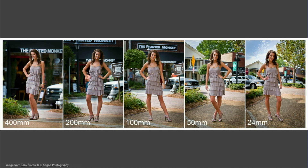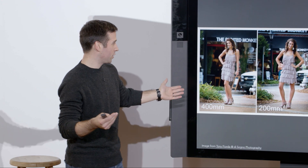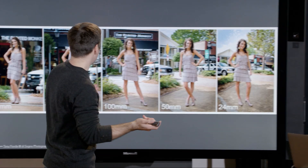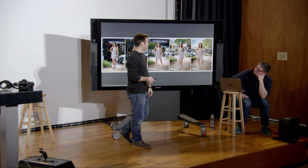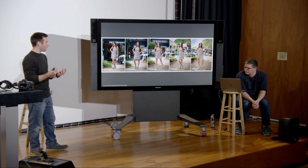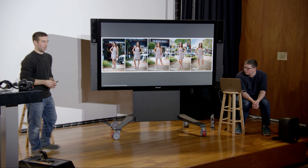The same effect applies to the human body. At 400mm, the subject appears right in front of the storefront — no sense of space or depth, no way to tell how far she is from the store. At 24mm, you're almost wondering where that painted monkey storefront is — it feels like she's miles away from it. The relationship between your subject and background depends partly on distance, but also on what lens you have: wide, normal, or telephoto.